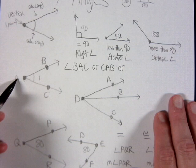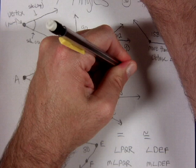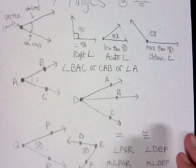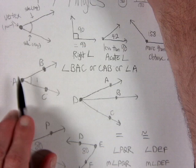There is an exception: if there is only one angle drawn out of a vertex, you can get away with naming it using just the vertex letter — in this case, angle A. If there were more than one angle at that vertex, you would have to use three letters, but with only one angle you can use just the vertex letter.